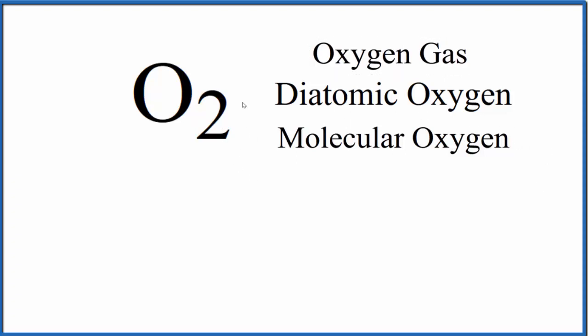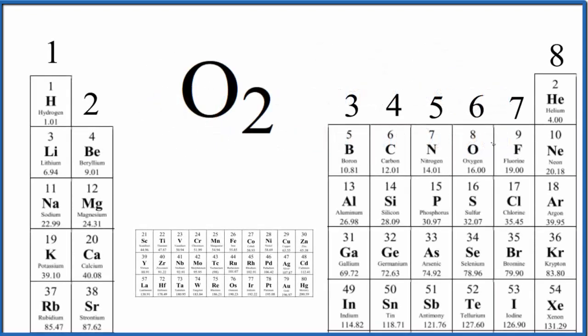Oxygen is in group 16, sometimes called 6A. It has six valence electrons. We have two oxygen atoms, so two times six gives us a total of 12 valence electrons for O2.